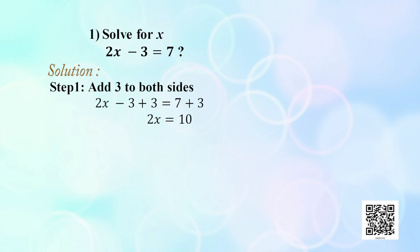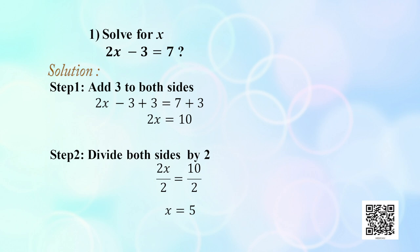If you add 3 on both sides, the left hand side becomes 2x − 3 + 3 and the right hand side becomes 7 + 3. The −3 + 3 cancels, leaving 2x = 10. Step 2: divide both sides by 2. 2x ÷ 2 = 10 ÷ 2, the 2s cancel, leaving x = 5. Therefore x = 5 is the required solution of the equation.